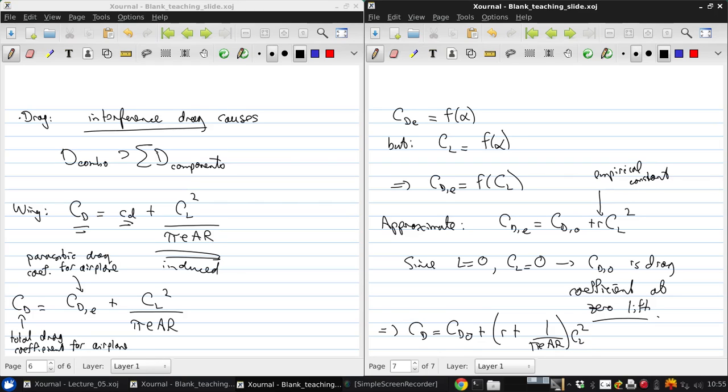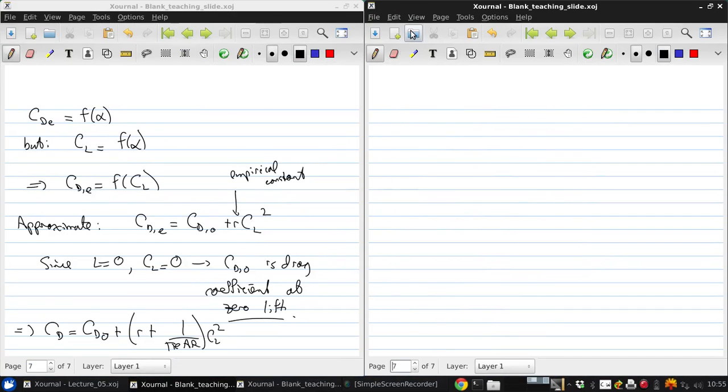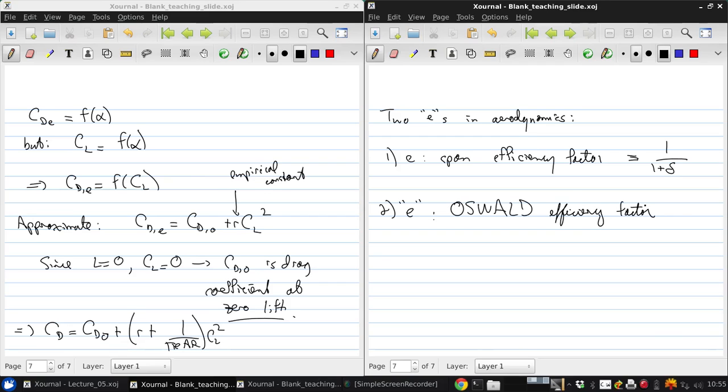Putting this back into the original equation. Now, it is a sad and unfortunate truth that there are two definitions of lowercase letter e in aerodynamics. What we had before was the span efficiency factor, which was 1 over 1 plus delta. Now we have a new e. It's called the Oswald Efficiency Factor. In my notes and course handouts, I'm going to use e sub O.